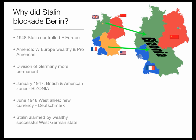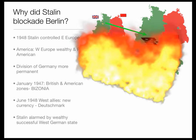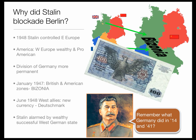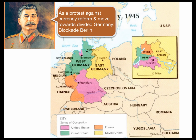In June of 1948, the Western Allies introduced a new currency to West Germany — the Deutschmark. This really seemed to be creating a new, independent, politically separate West Germany, which was very alarming to Stalin. In Stalin's memory was what Germany had done in 1914 and 1941, when Germany had invaded Russia. As a protest against currency reform and the move towards a divided Germany, Stalin decided to blockade Berlin.